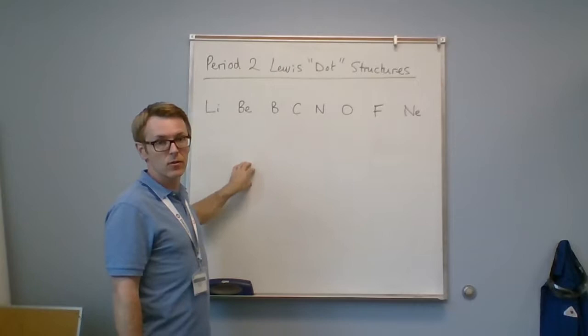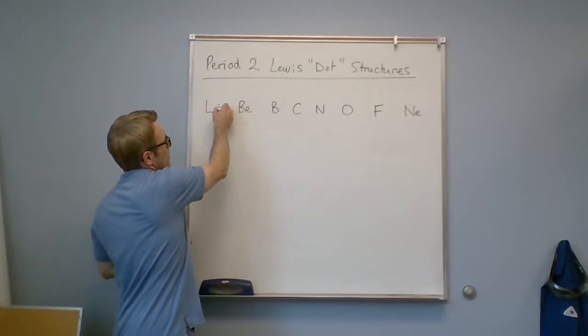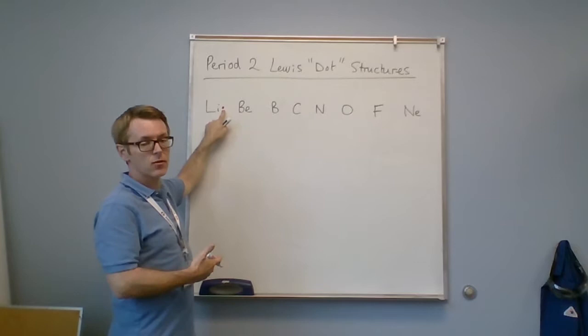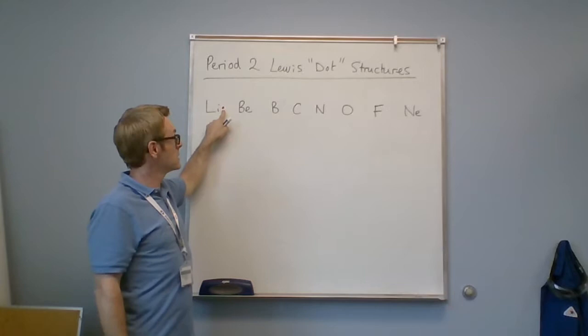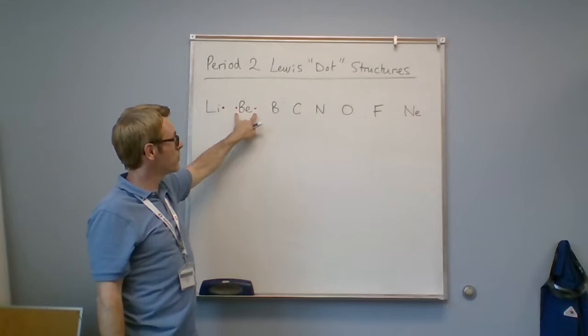Lewis dots are valence electrons. For Group 1 elements or the alkaline metal elements, we write one dot, typically you'd write it on the right here, and that represents one valence electron. Elements in Group 1 have one valence electron. Elements in Group 2 have two valence electrons, and that's why they're in Group 2.